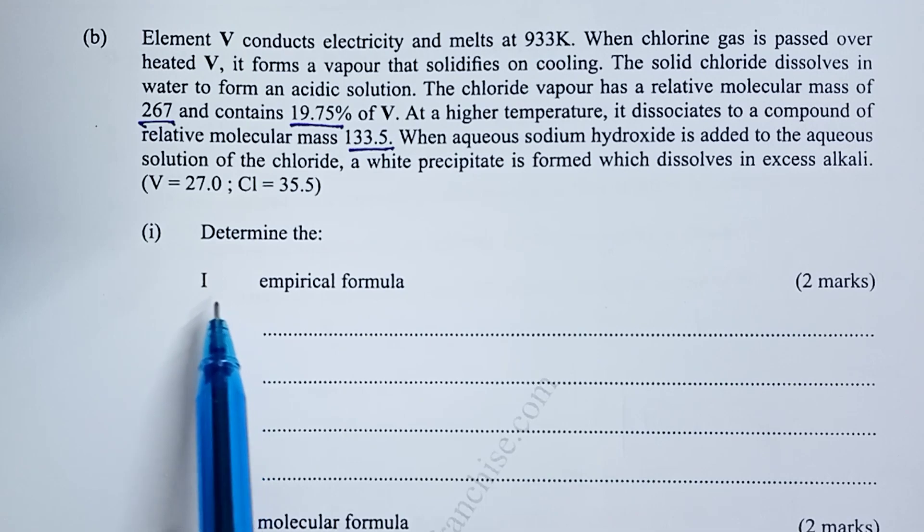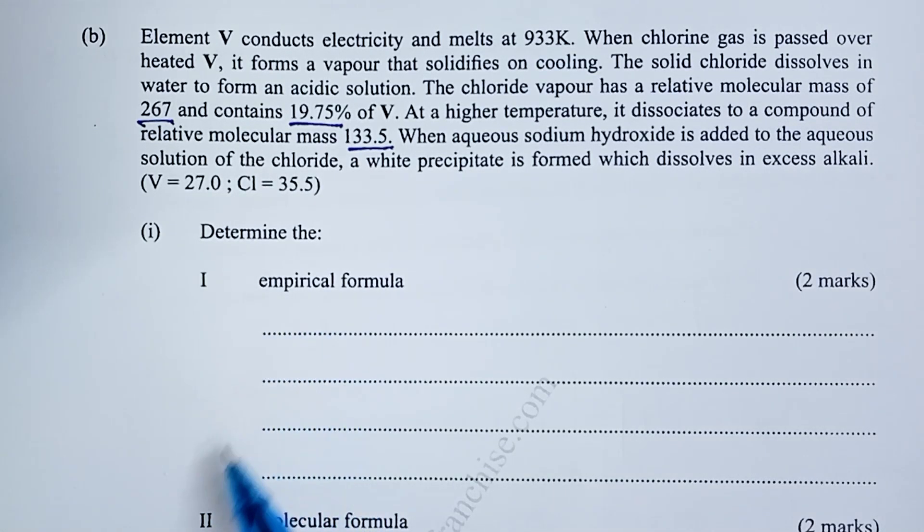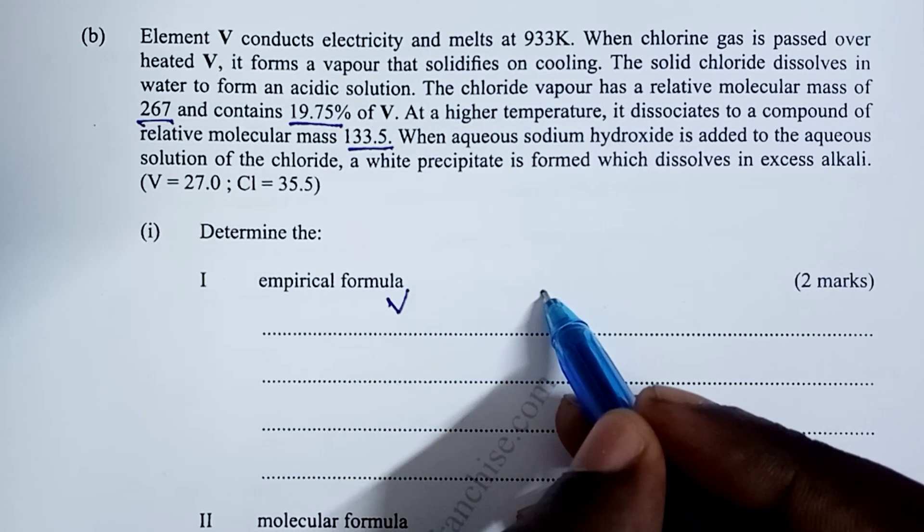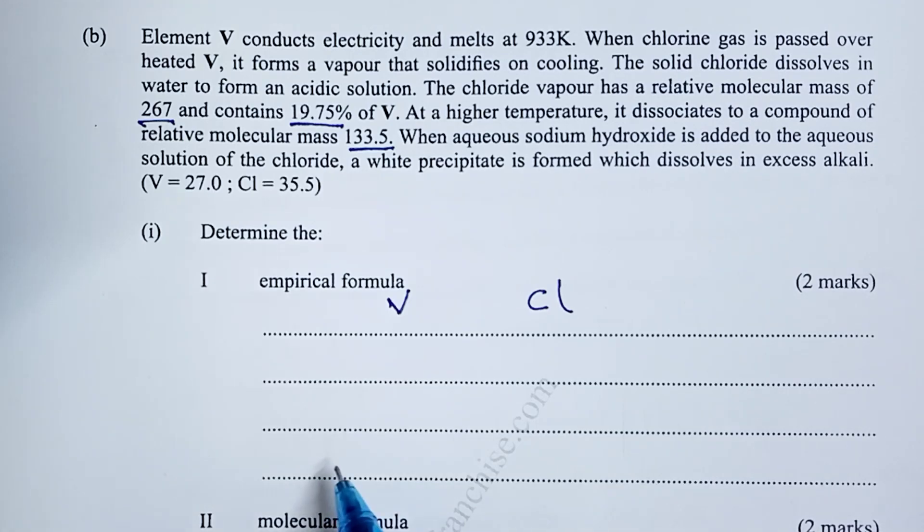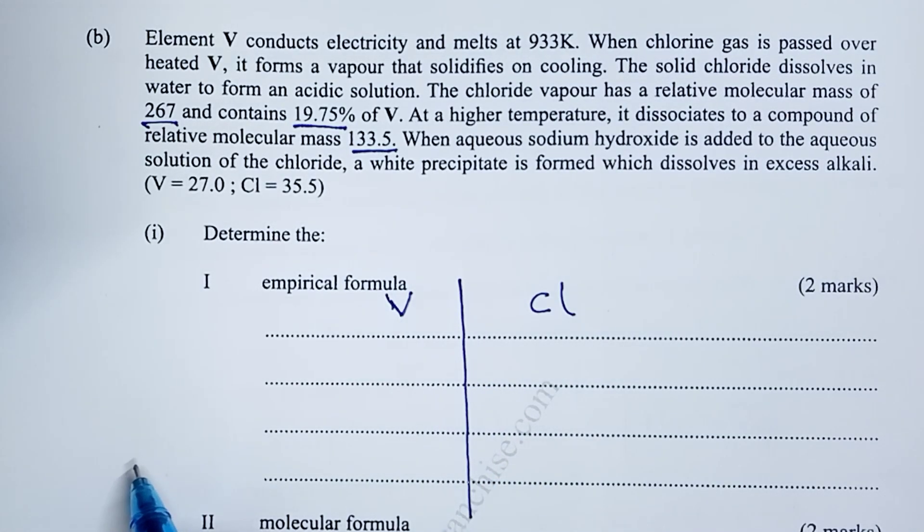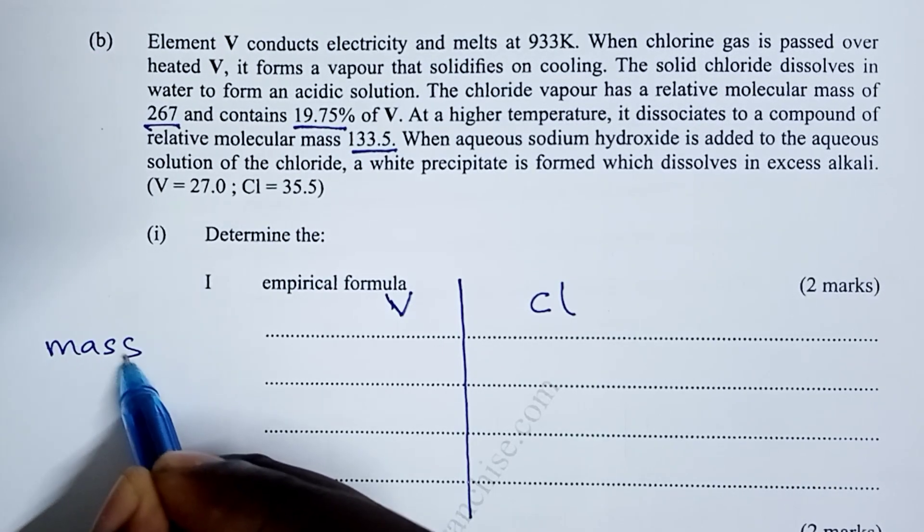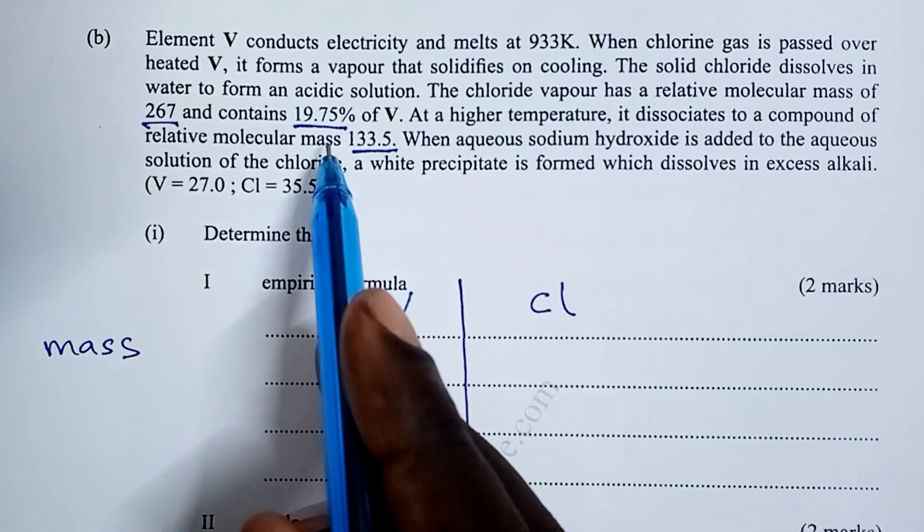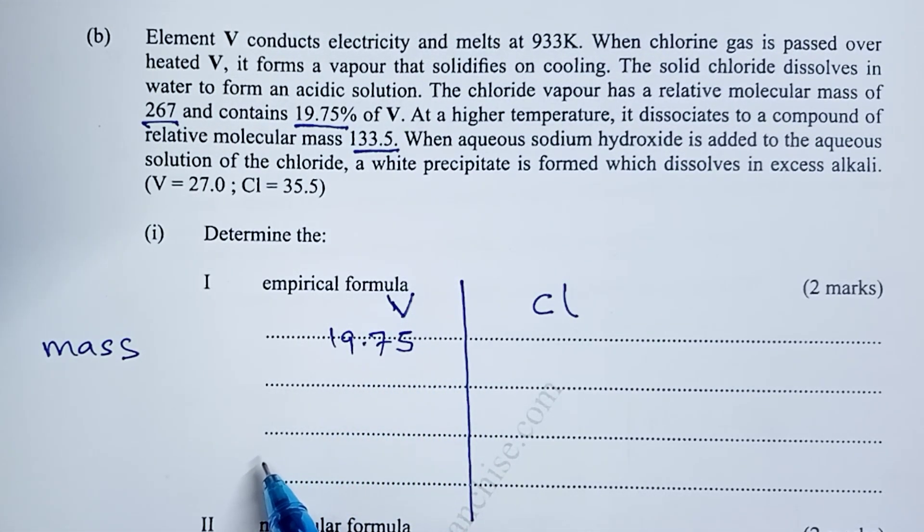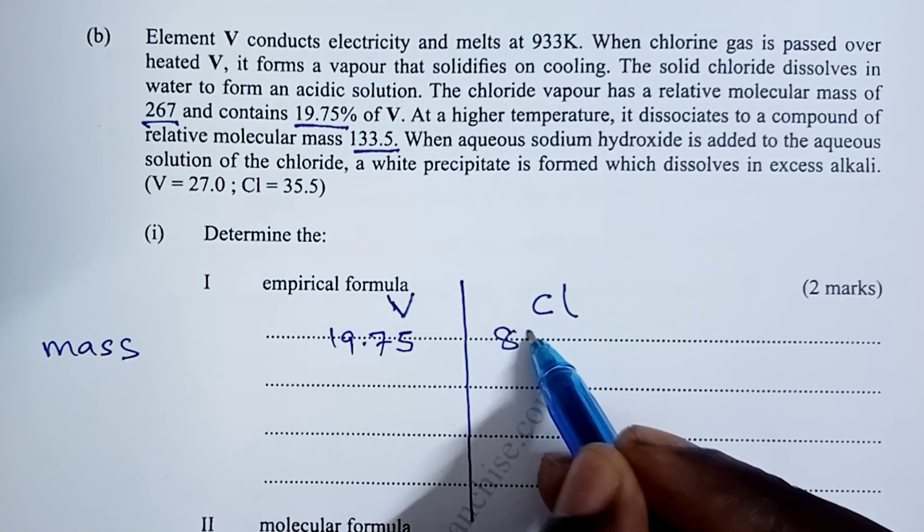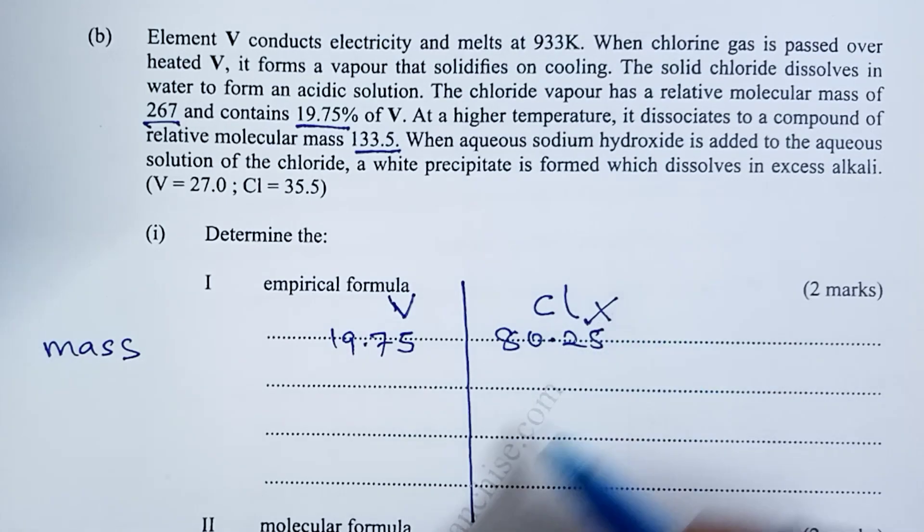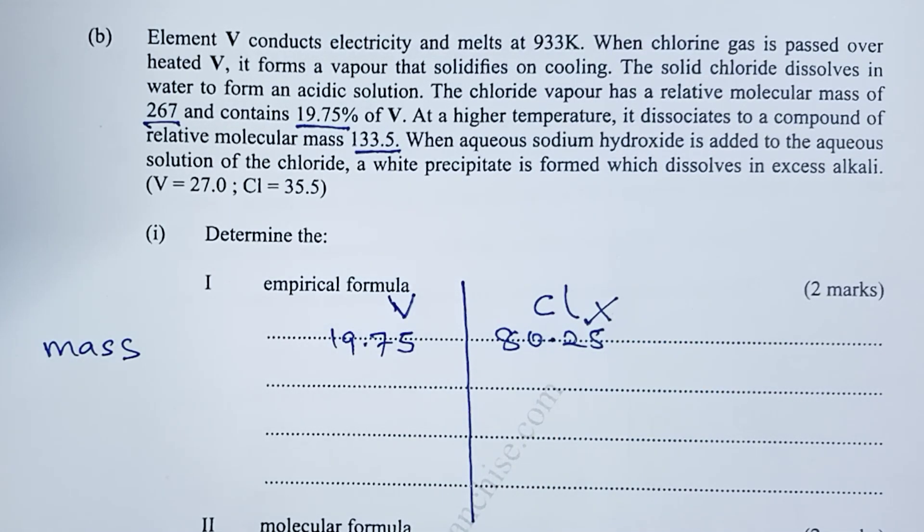For part 1 of Roman 1, we are asked to determine the empirical formula. So as usual when dealing with empirical formula, we shall have a tabular kind of working. We have V, element V, and element Cl for chlorine being involved here. We start with the mass, and we take the percentages to be the masses. So V we are told is 19.75%, so we take that as the mass. So out of 100, that leaves us with 80.25 as the percentage for the second element chlorine. Getting this out of 100 earns you the first half mark.